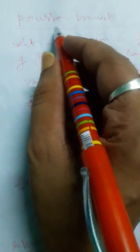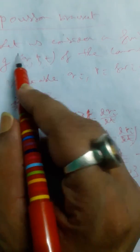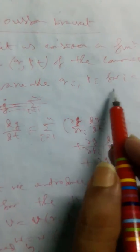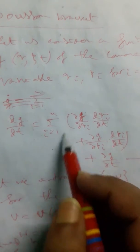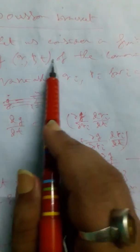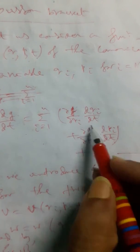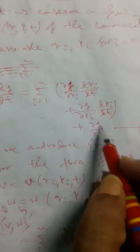Today we discuss an important topic: Poisson brackets. Let us consider a function g as a function of q, p, t of the canonical variables qi, pi for i equals 1 to n. Now dg/dt, that will be: sum from i equals 1 to n of (∂g/∂qi)(dqi/dt) plus (∂g/∂pi)(dpi/dt) plus ∂g/∂t for the time variable t.